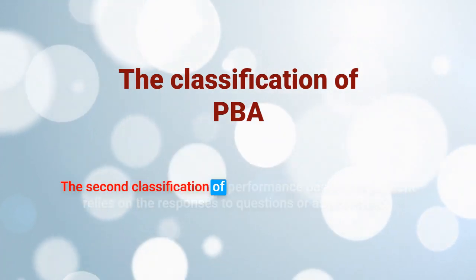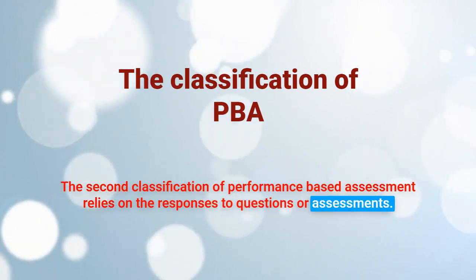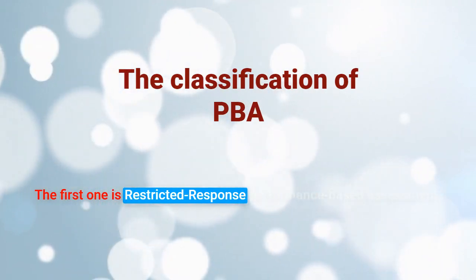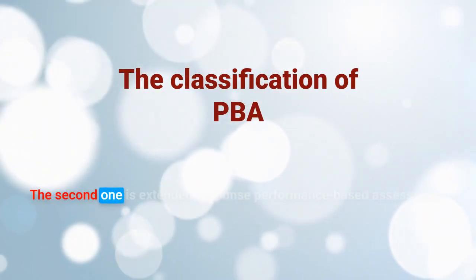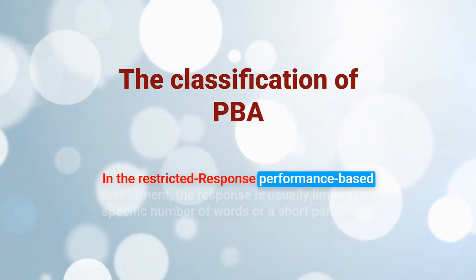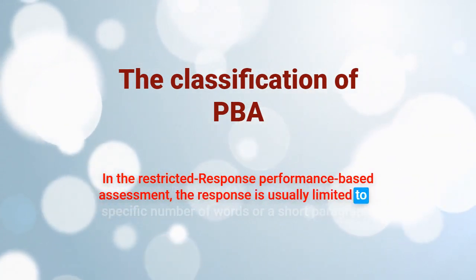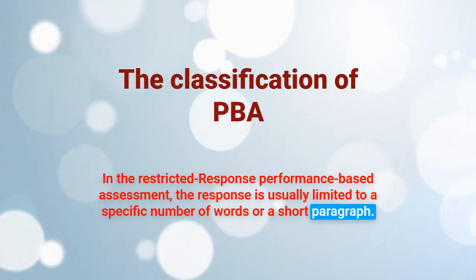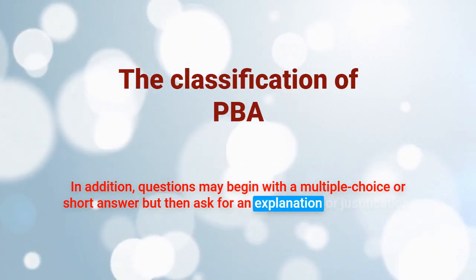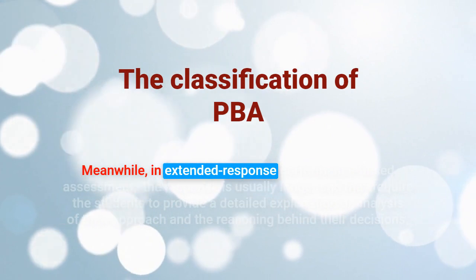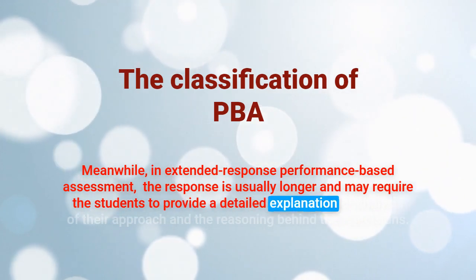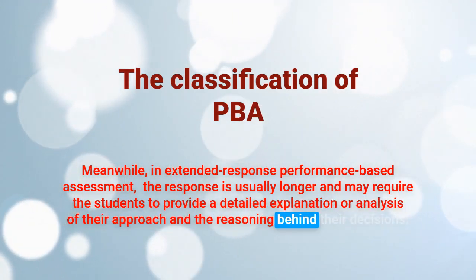The second classification of performance-based assessment relies on the responses to questions or assessments, giving us two types. The first is restricted response performance-based assessment, and the second is extended response performance-based assessment. In restricted response PBA, the response is usually limited to a specific number of words or a short paragraph, and questions may begin with multiple choice or short answer but then ask for an explanation or justification. In extended response PBA, the response is usually longer and may require students to provide a detailed explanation or analysis of their approach and the reasoning behind their decisions.